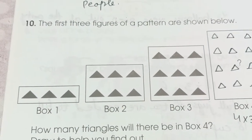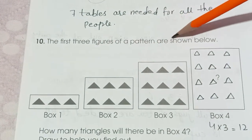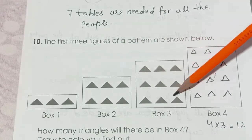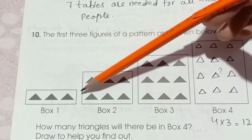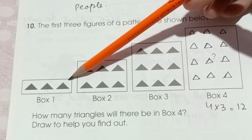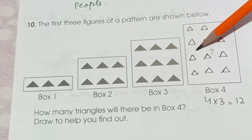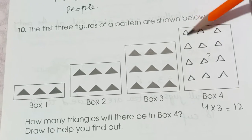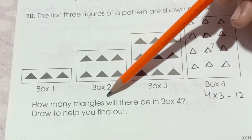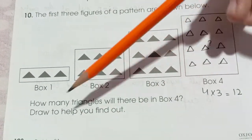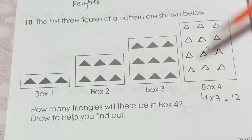Question number 10. The first 3 patterns are shown. 3, 6, 9. We have to draw the number 4 pattern. So as we can see, here we have the table of 3. 3 ones are 3, 3 twos are 6, 3 threes are 9, 3 fours are 12. It means we have to draw 12 triangles here. 3 fours are 12. How many triangles will there be in box 4? Draw to help you find out. So we have to draw 12 triangles in this box.